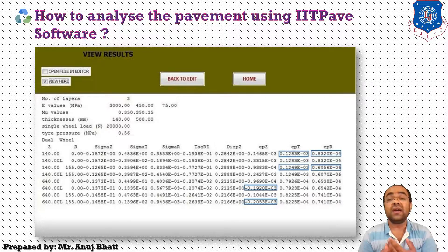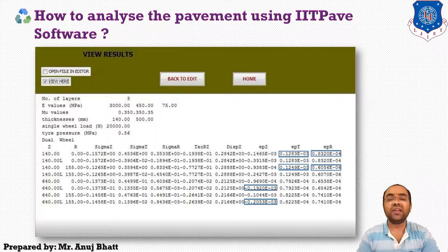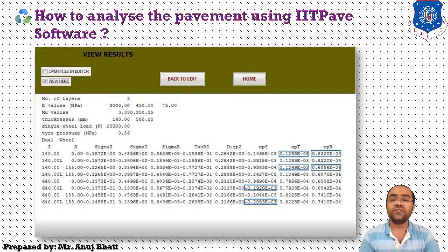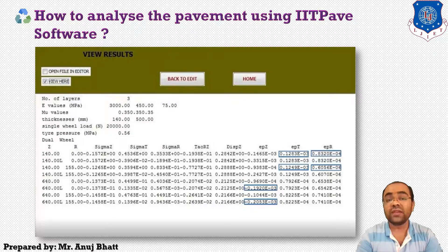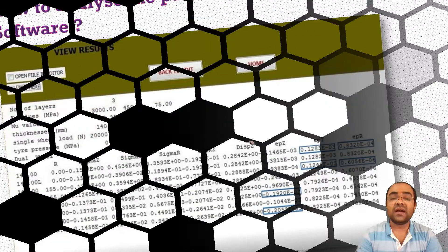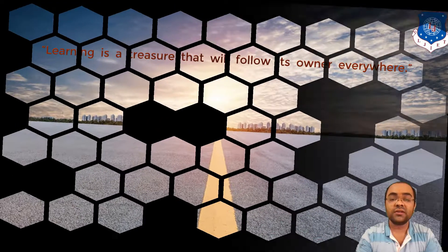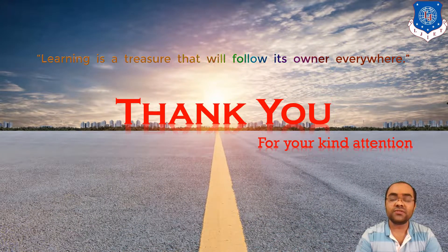Here you can also apply up to four layers and change the desired thickness of the pavement. So this was the whole process of how we can use the IIT software to analyze the flexible pavement. With this I'm concluding my lecture — thank you so much students for your kind attention. We'll see you in the next lecture.